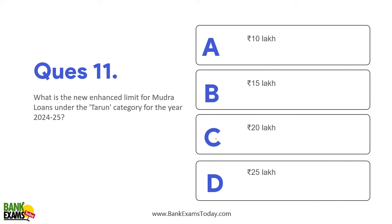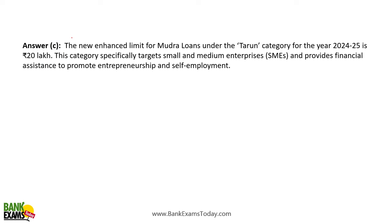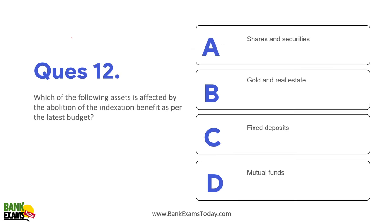What is the new enhanced limit for Mudra loans? It used to be ₹10 lakhs, but if somebody has taken a loan under the Mudra scheme under the Tarun category and has repaid properly, the limit has been increased to ₹20 lakhs. The new enhanced limit for Mudra loans under the Tarun category is ₹20 lakhs.